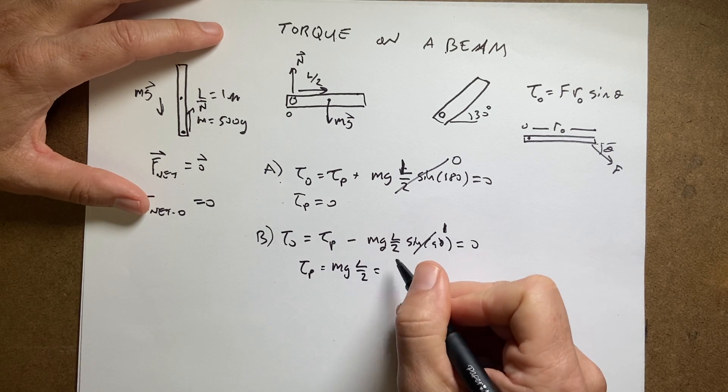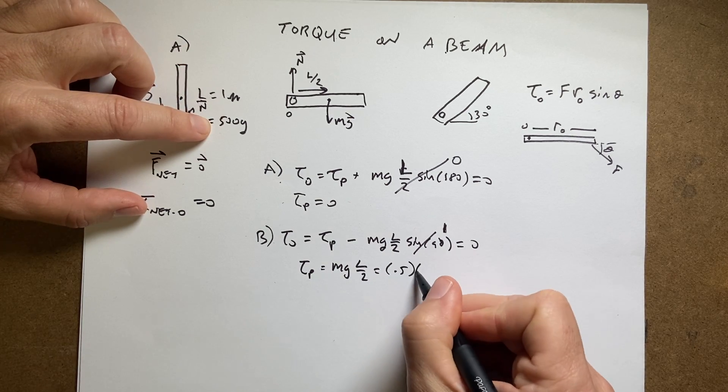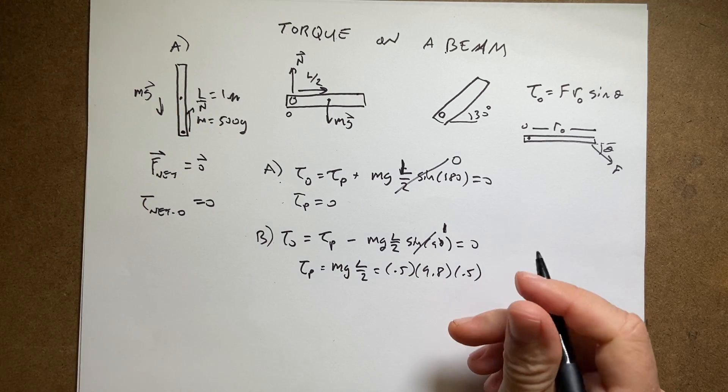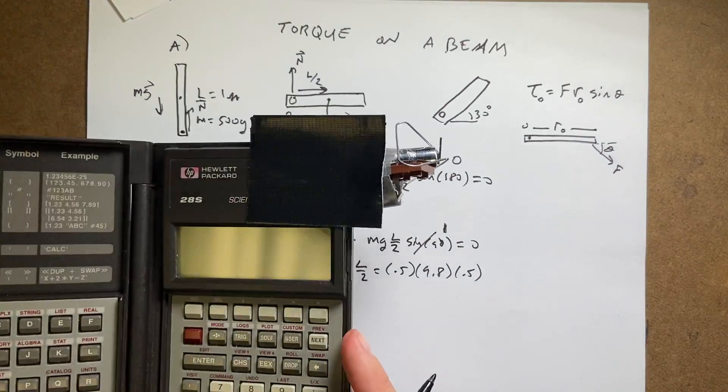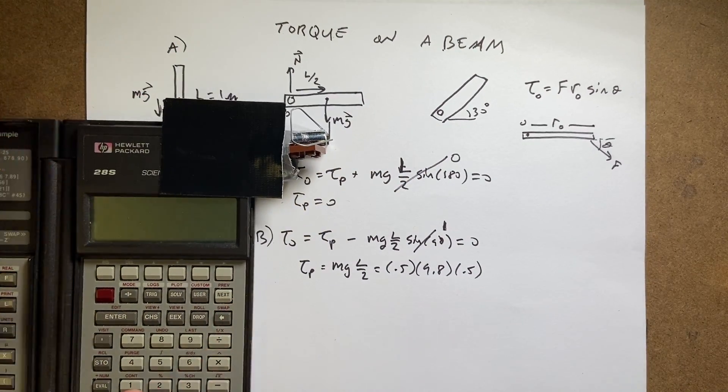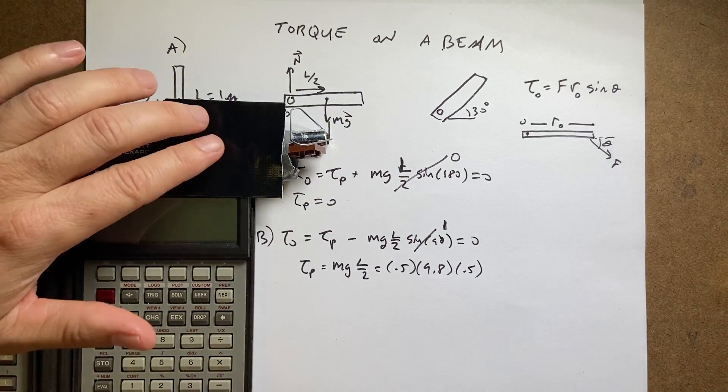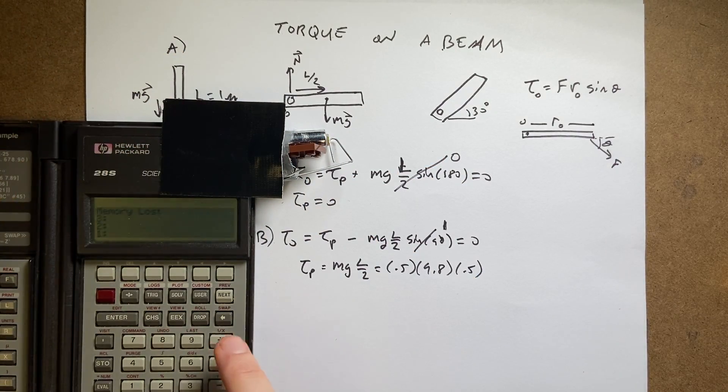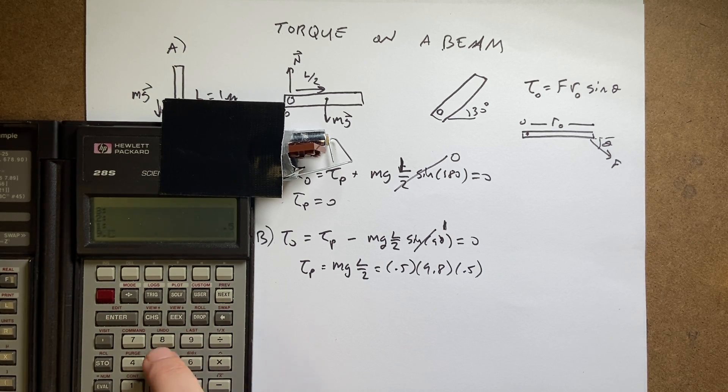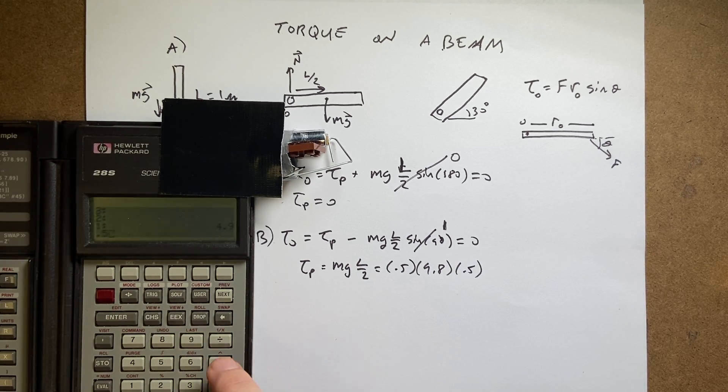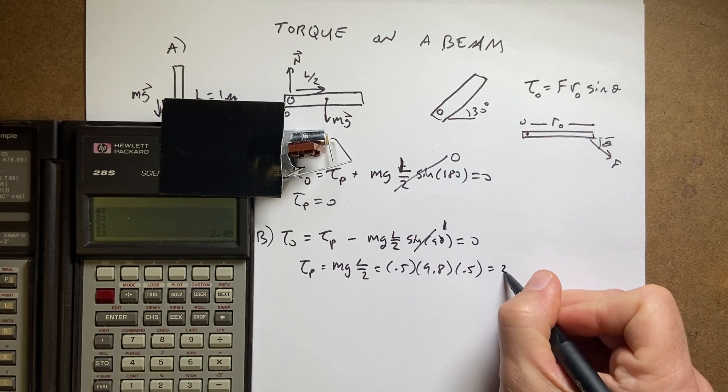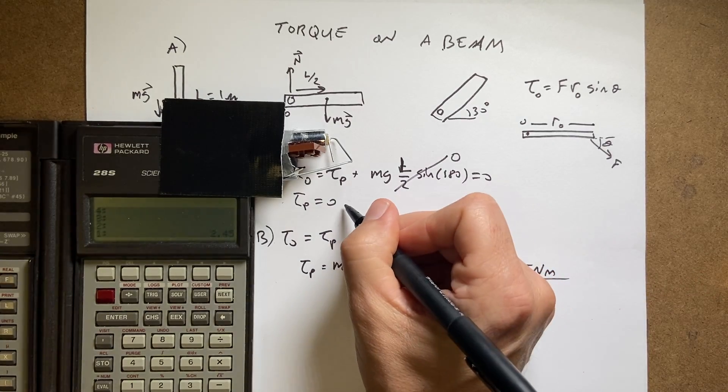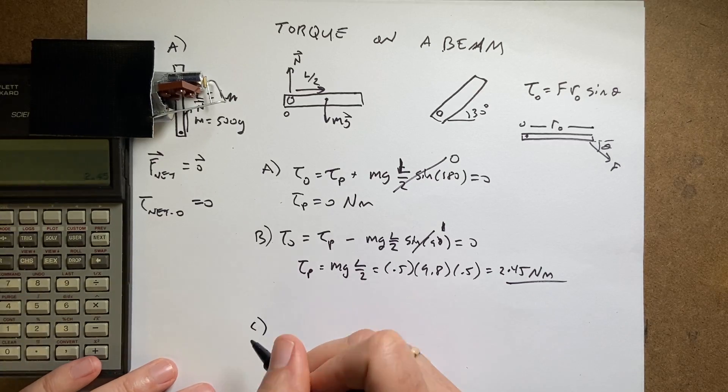So it's going to be 0.5 kilograms times 9.8 times 0.5. I think I could probably do that in my head, but I'm going to use my calculator. Oh, my little paper clip came off. Okay, so I get 0.5 enter, 9.8 times 0.5 times, and I get 2.45 newton-meters. That's the torque. This one is zero newton-meters.